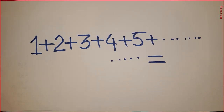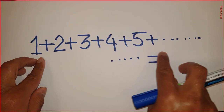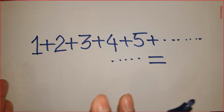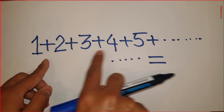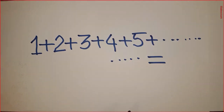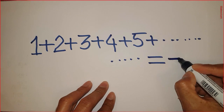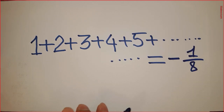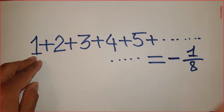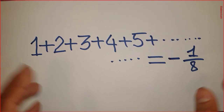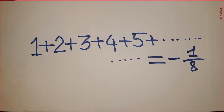Hey, math lovers, it's me Roby. Welcome back. This is a series of natural numbers, and this series goes up to infinity. Would you please tell me what you think the result of this series is? I know you'd say the result is infinite, right? But would you believe me if I say that the summation of this series equals minus 1 over 8? It seems like insane thinking, right? I'm going to prove this now, so stick with me for the next few minutes.